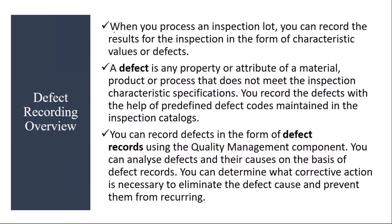Basically, when you process an inspection lot, you can record the results for the inspection in the form of characteristic values or defects. Normally in our quality inspection process, after the inspection lot is created and the physical inspection activity is completed, the next step is results recording. The quality analyst will go to the system and enter the results. During results recording, if there is any defect or failure — suppose a characteristic value is not within the permissible limits — then you can do the defect record.